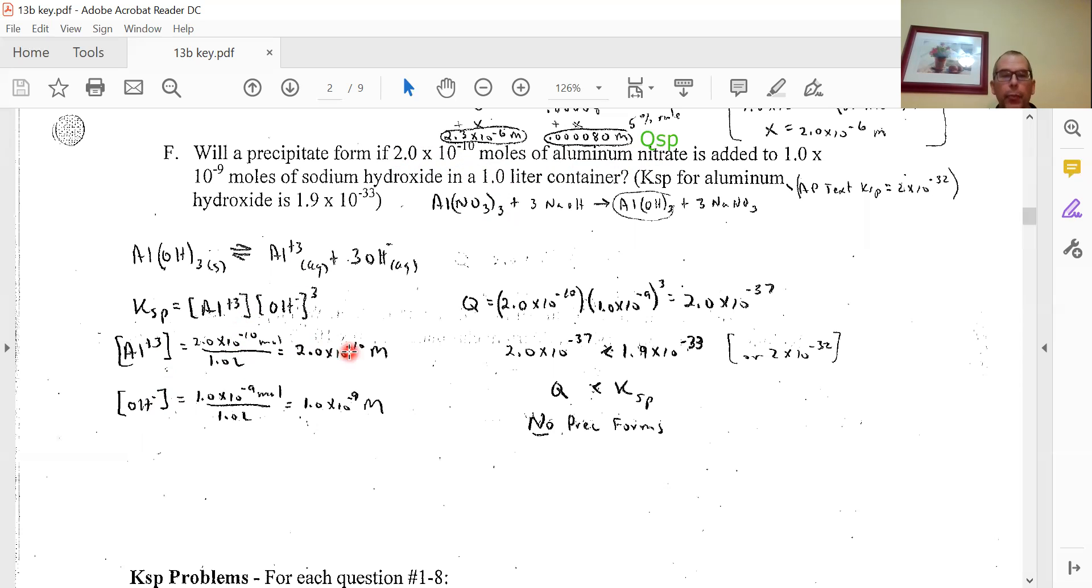Now notice where OH is coming from - it's from sodium hydroxide, not aluminum hydroxide. If it's 1×10^-9 moles of sodium hydroxide, it's 1×10^-9 moles of sodium and 1×10^-9 moles of hydroxide over 1 liter. I don't triple it because it's coming from sodium hydroxide.